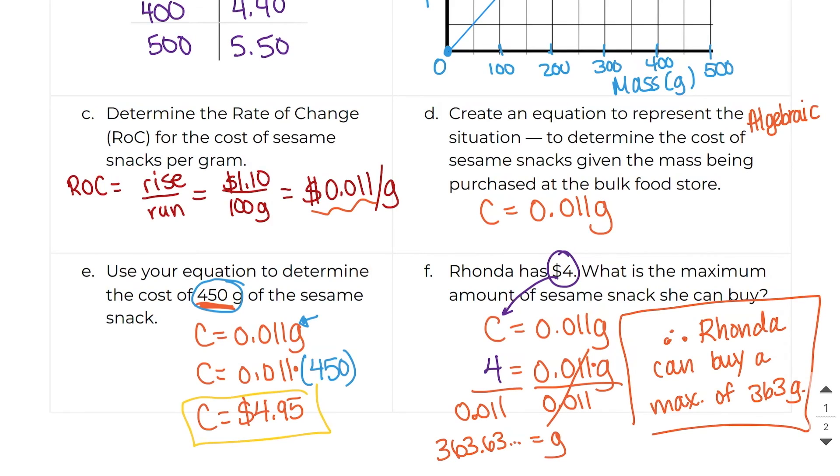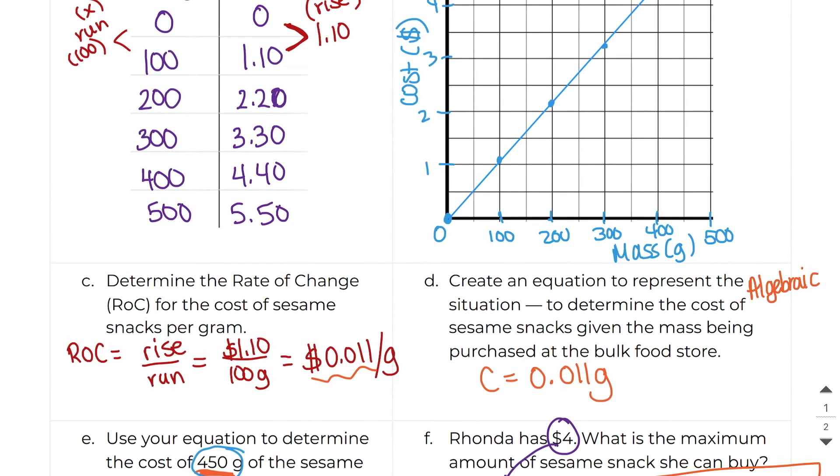Let's check to see if that's right in our graph. So we know that she has $4. So if I go over to $4 on my graph, I can see here that this will fall a little bit after 350. So 363 definitely seems like an answer that makes sense.